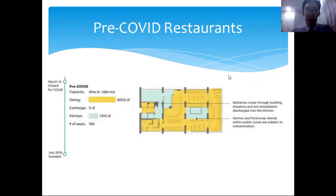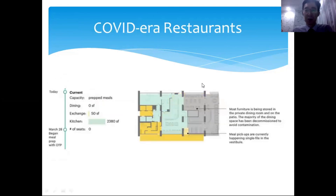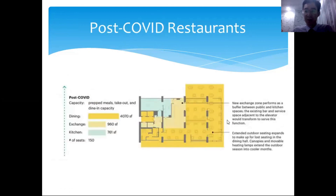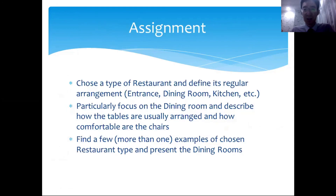Some additional information is shared about what restaurants used to look like before the current health crisis compared to how they look now, with most areas closed off. Now for the assignment: there are three tasks. First, choose a type of restaurant and define its variable arrangement — for example, if you choose a bar, you won't have a large kitchen.